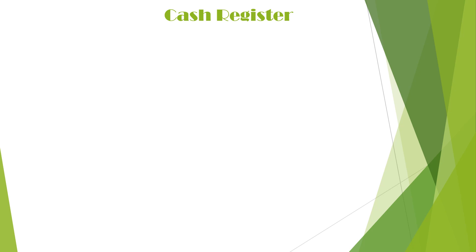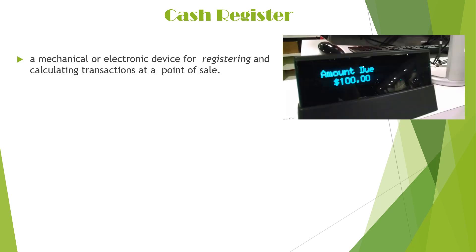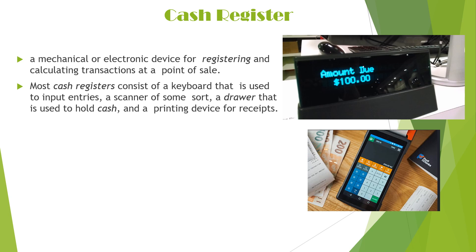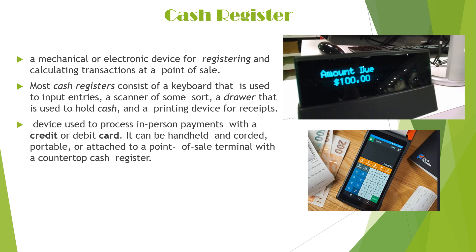Another equipment is the cash register. A cash register is a mechanical or electronic device used for registering and calculating transactions at a point of sale. Most cash registers consist of a keyboard used to input entries, a scanner of some sort, a drawer to hold cash, and a printing device for receipts showing the transaction amount. The cash register is used to process in-person payments with a credit or debit card, and can be handheld, portable, or attached to a point-of-sale terminal with a countertop cash register.